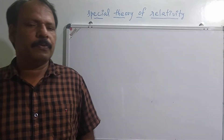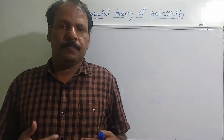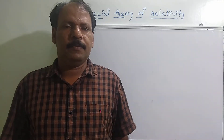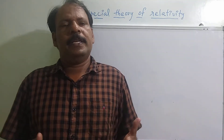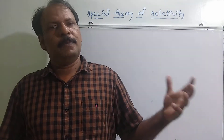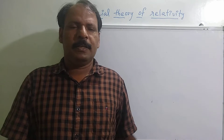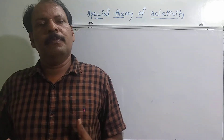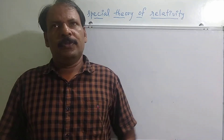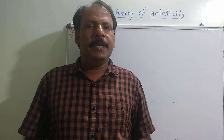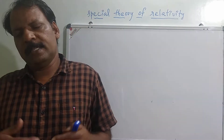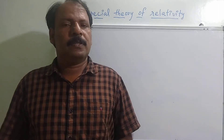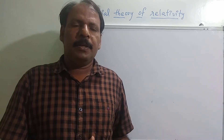Consider the state of a system. Right now I am at rest with respect to this board. When I take the reference as the sun, the earth is moving, and since I am situated on earth, I will also be moving with earth. So with respect to the sun, I will be in a state of motion, and with respect to this whiteboard, I will be in a state of rest. As the reference changes, the state of the system also changes — it can be in a state of motion or a state of rest.